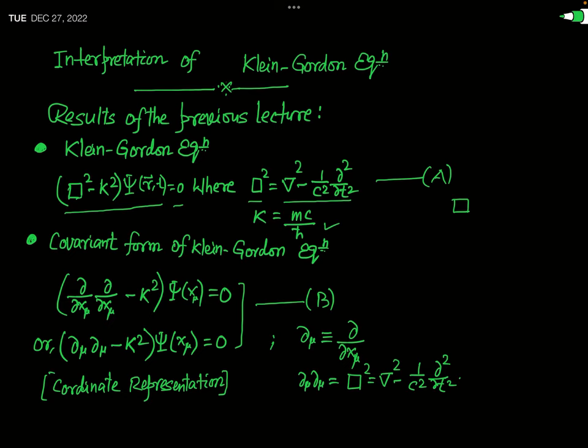Although the symbol M has been used, this is the rest mass, not the relativistic mass. When we write this KG equation in four-vector or covariant form, the equation is written as (∂/∂x^μ)(∂/∂x^μ) minus k-squared, times ψ(x^μ) equal to zero. The operator ∂_μ∂^μ is also written simply as ∂_μ, giving: (∂_μ∂^μ − k²)ψ(x^μ) = 0, which is the covariant form of the KG equation.